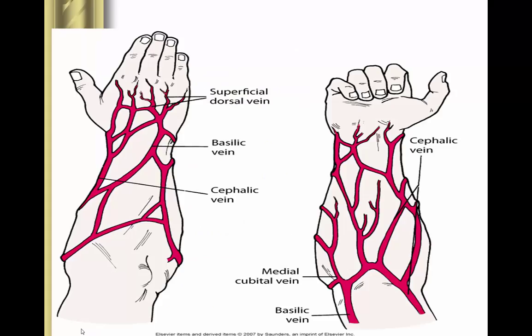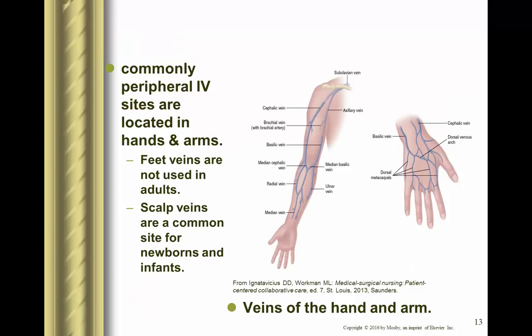This picture shows veins in our arms and hands. This more detailed picture shows the upper arm veins. Generally, we use those upper arm veins if we're going to place a PICC, or peripherally inserted central catheter. For a central line, we insert it in the subclavian vein or the internal jugular vein.